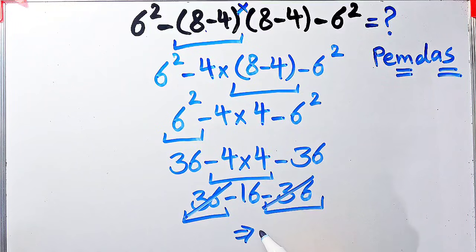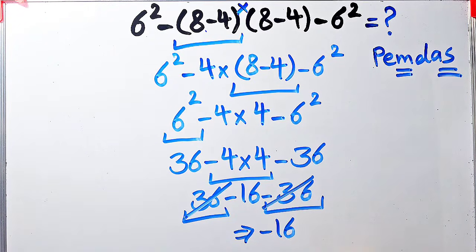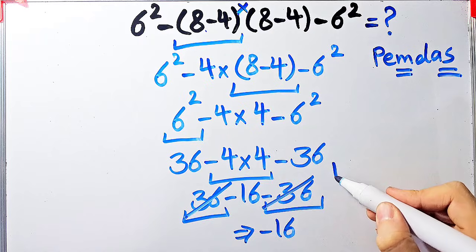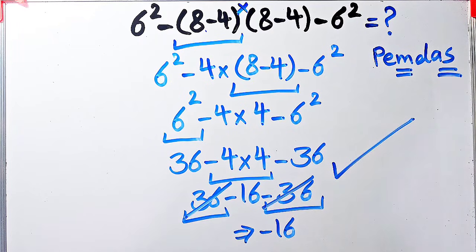We simplify from left to right: 36 minus 16 minus 36. The final answer of this question equals negative 16. Thanks for watching, guys — please subscribe to the channel and leave a comment. Goodbye!